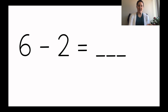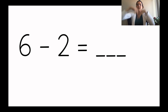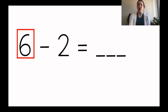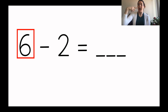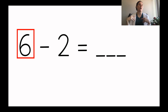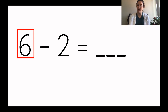I'm looking at this subtraction number sentence and I'm going to solve it by using drawings. It says six minus two equals blank. First I'm going to need to show six circles — I'm going to draw six circles to show the six that I'm starting with. In subtraction I start with a group and then I'm going to minus some of them. Watch me draw my six circles.